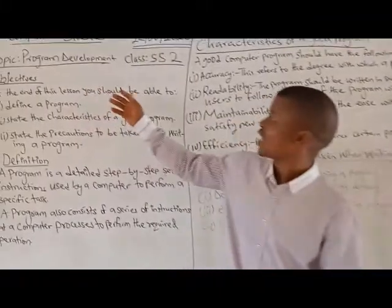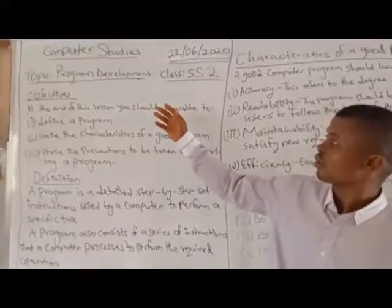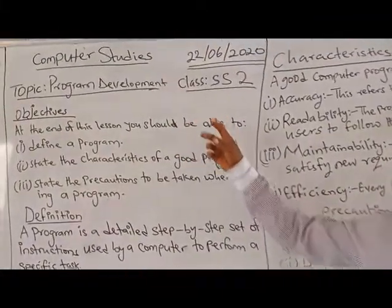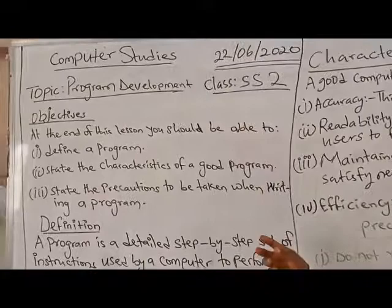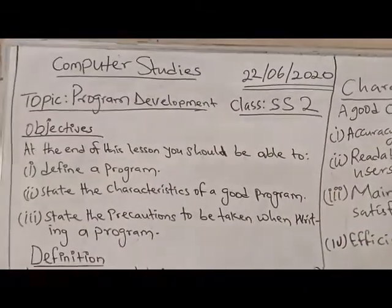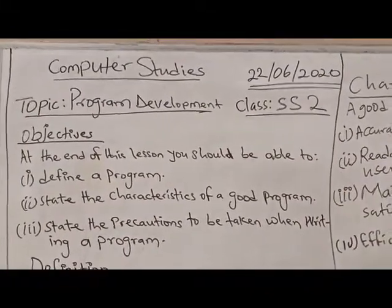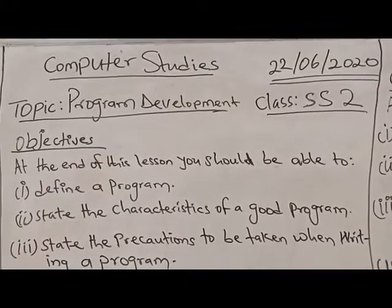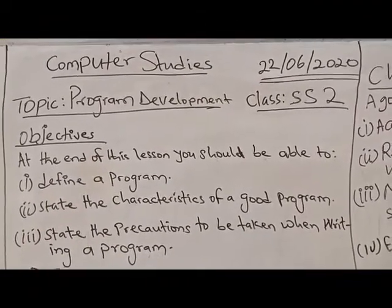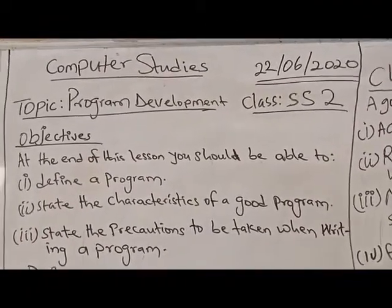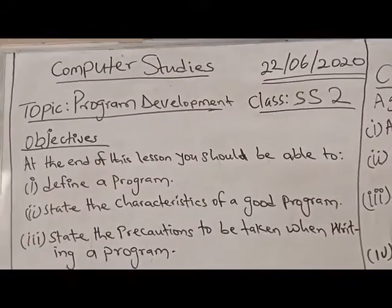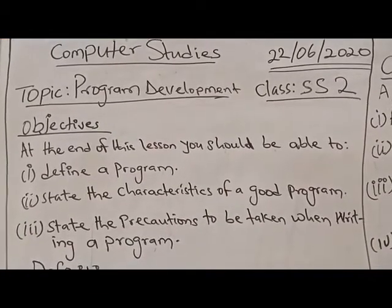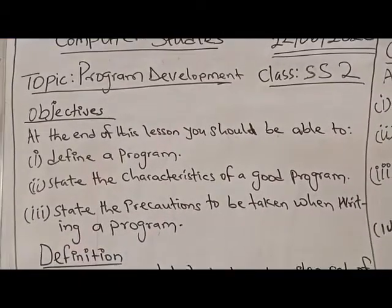Today we are going to look at a new topic in our seventh week: program development. The objectives of this class are that at the end of the lesson you should be able to define a program, state the characteristics of a good program, and state the precautions to be taken when writing a computer program.